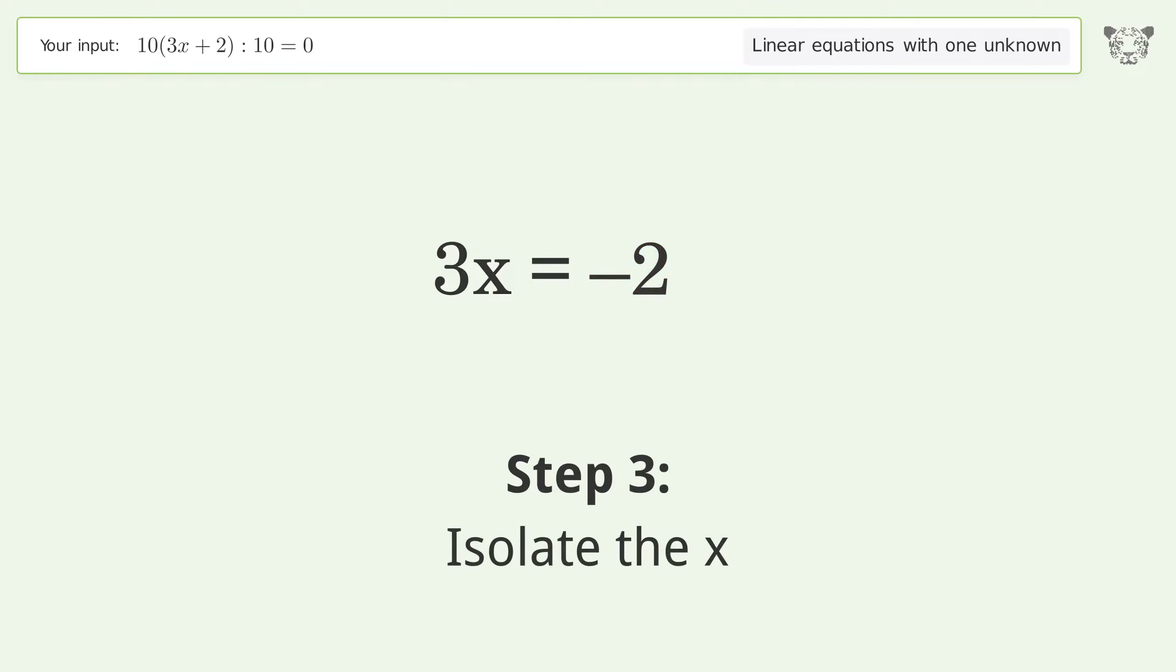Isolate the x. Divide both sides by 3. Simplify the fraction. And so the final result is x equals negative 2 over 3. Thank you.